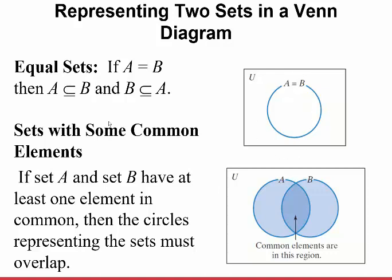What we'll spend a lot of time on is sets with common elements. We have the universal set with set A and set B, and they have some elements in common. For example, set A might be the numbers 1, 2, 3, 4, 5, and set B might be 4, 5, 6, 7, 8. They have two elements in common, so those common elements appear in the overlapping part. If sets A and B have at least one element in common, the circles representing them must overlap, and this overlap region contains elements found in both A and B.